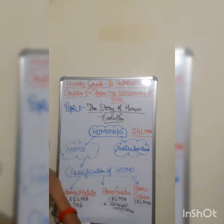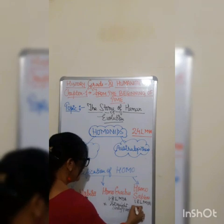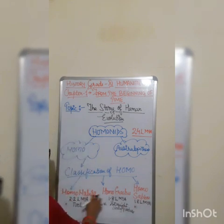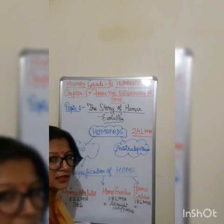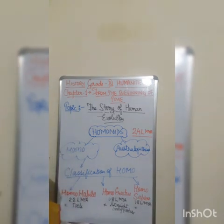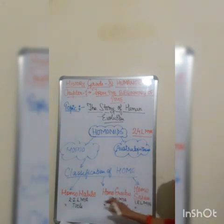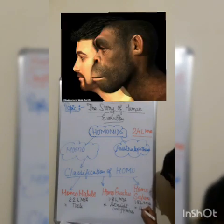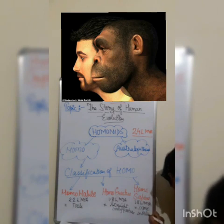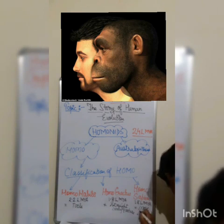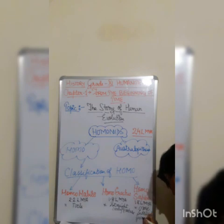Homo sapiens were the most intelligent among homo habilis and homo erectus. They had high thinking skills, high intelligence power, and could use many things far better than homo habilis and erectus. We can add that they were more intelligent and great thinkers.